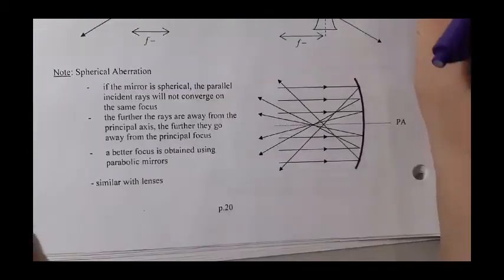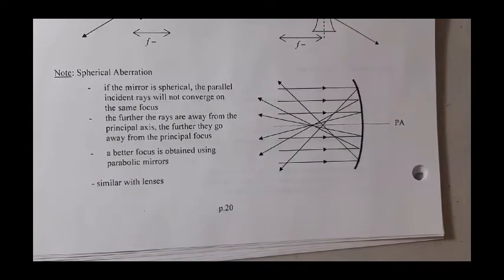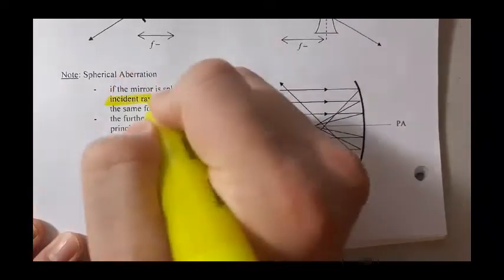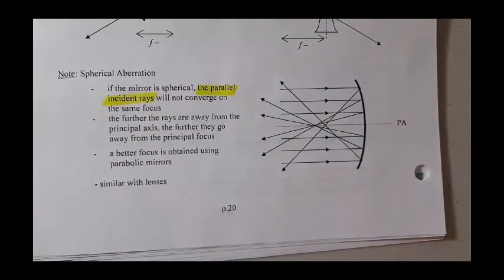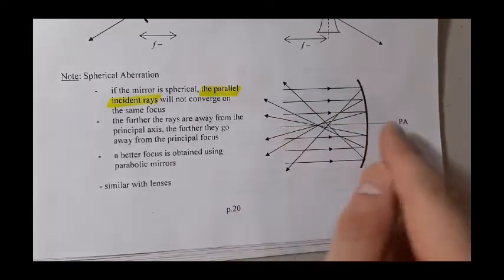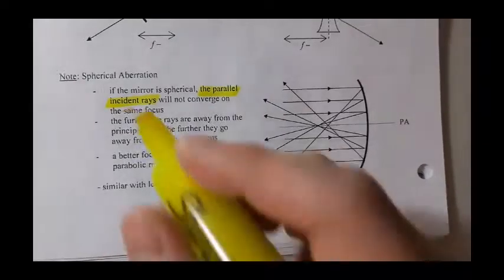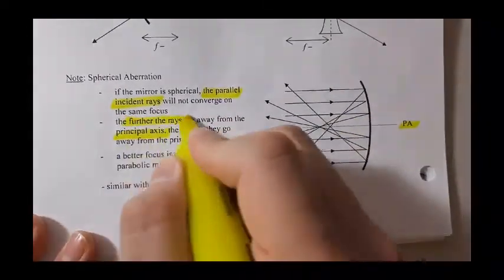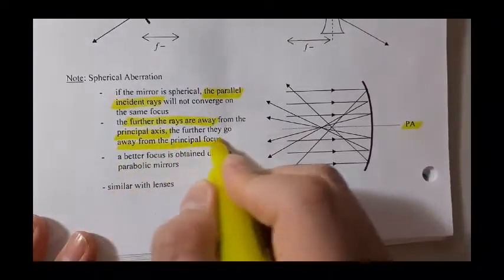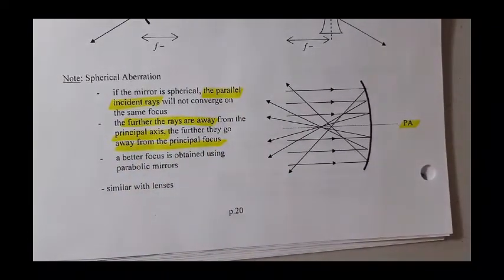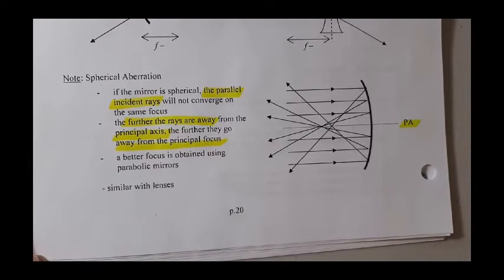If the mirror is really round and becomes a sphere, the parallel incident ray will not converge on the same focus. The further the radiation is away from the principal axis — PA — the further it goes away from the principal focus. So if you move further and further away, that's the point where everything becomes blurry because you cannot focus at the middle point. And that happens to our eyes too.